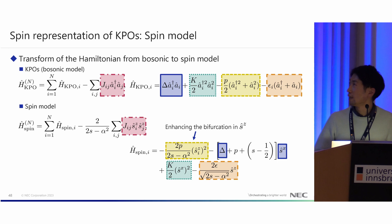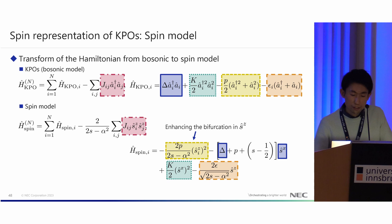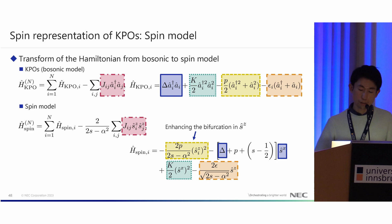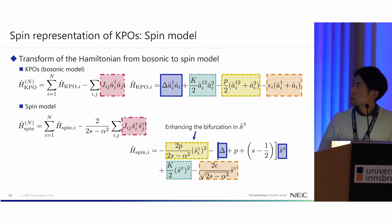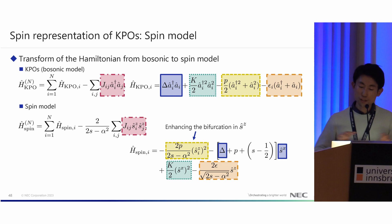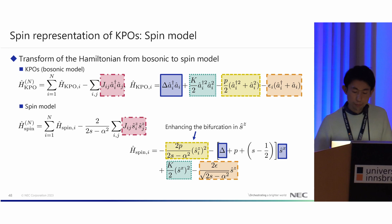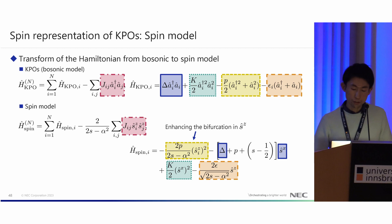In the resulting spin model, terms in the KPO Hamiltonian map as follows: a†a maps to spin operators, and a† plus a maps to another spin combination. We can find the correspondence between the KPO model and the spin model. For example, the a†a coupling of bosonic operators corresponds to coupling of the Z-component of spin operators. The detuning term maps to the transverse field, the Kerr non-linearity maps to a nonlinear S_X term, the pump term becomes the square of S_Z — enhancing the bifurcation of S_Z — and the coherent drive maps to a longitudinal field.